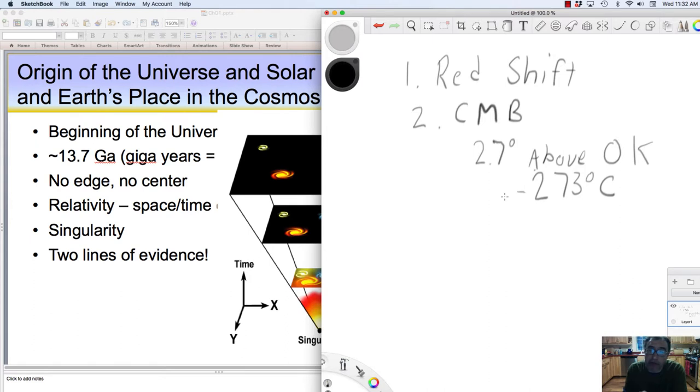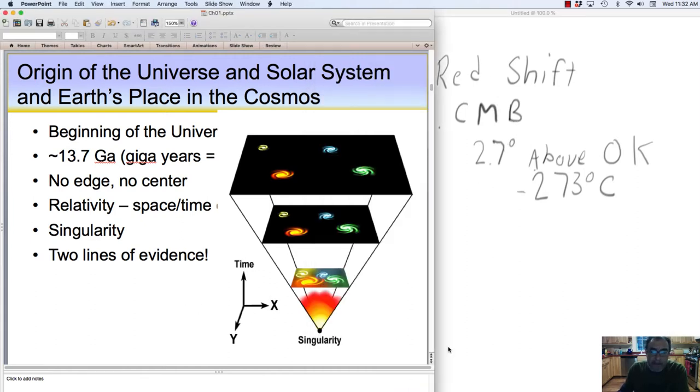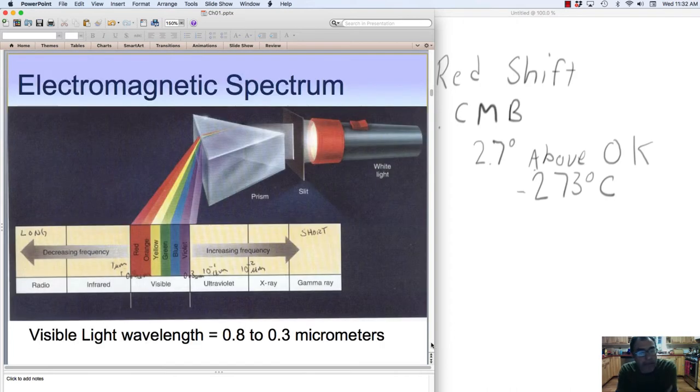So those are the two lines of evidence we use for the Big Bang. Let's take a look at this in a little bit more detail. One of the things we look at in terms of this redshift...